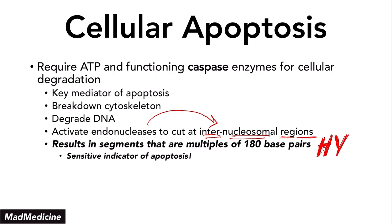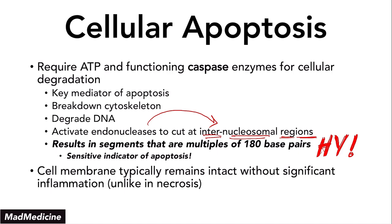If you ever get a test question where they give you a finding of DNA segments that are multiples of 180 base pairs, you know the cell went through apoptosis. Remember that. Unlike necrosis, the cell membrane will remain intact in this process and you will not get inflammation, because the intracellular components will not leak into the extracellular space and will not activate the inflammation cascade.